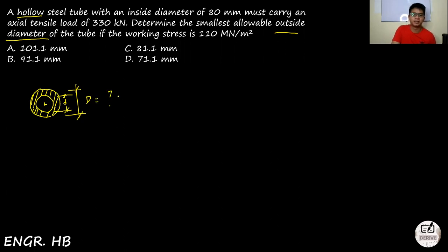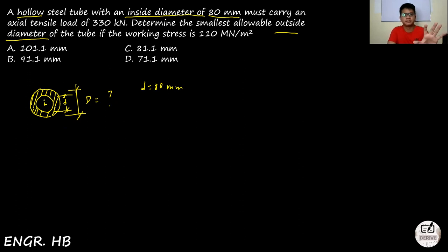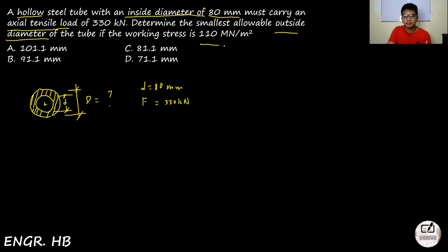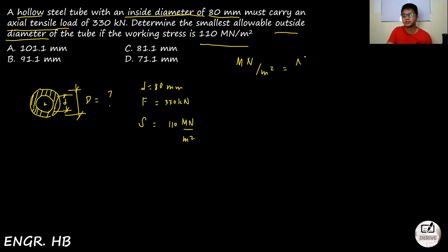The question looks for the allowable outside diameter, given that the inside diameter (small d) is 80 mm. The axial tensile force F is 330 kN, perpendicular to the cross-section. The working stress S is 110 MN per square meter. Note that MN per square meter is the same as N per square millimeter or megapascals. So S = 110 N/mm².